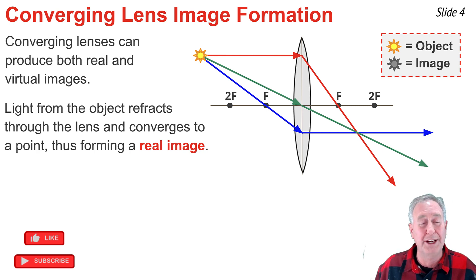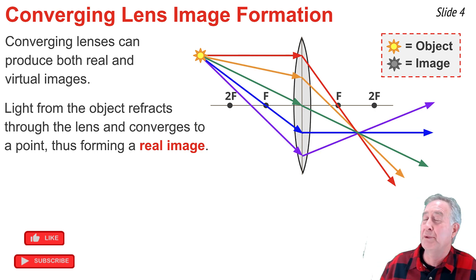Since all of this light starts from the same location on the object, I know that any light that starts from that same location will also pass through this image location, so thus I could draw how the orange ray will travel, and how the purple ray will travel through the lens.